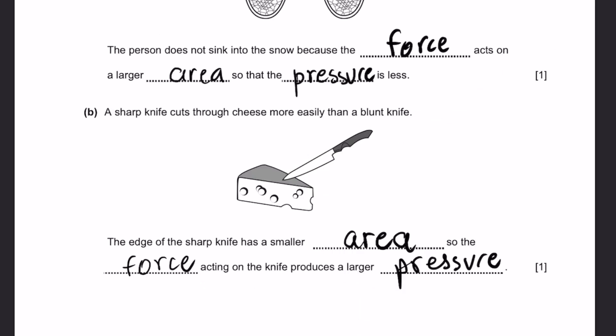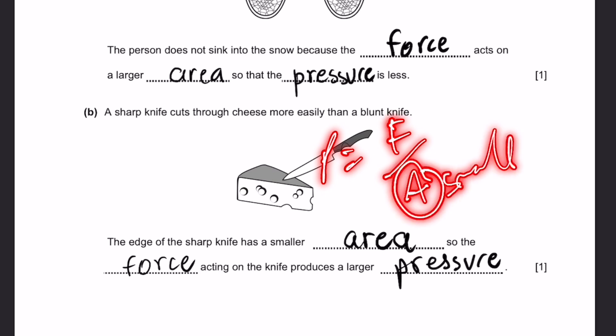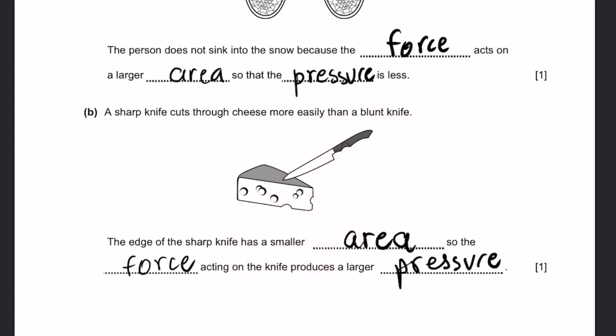Part B. A sharp knife cuts through cheese more easily than a blunt knife. The edge of the sharp knife has a smaller area, so the force acting on a knife produces a larger pressure. If the area is smaller, the pressure will be larger.